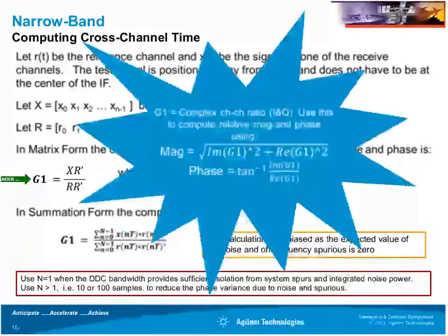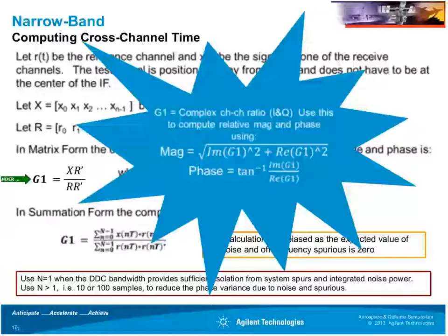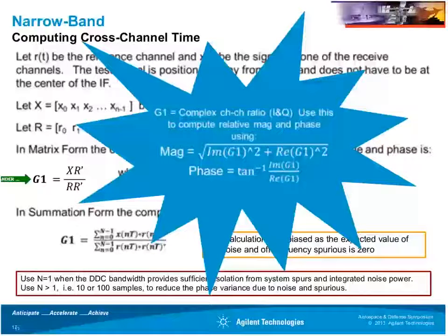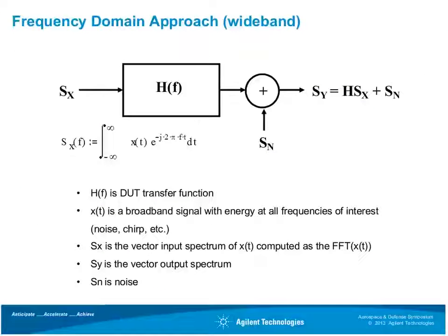Once you have G1, it's a simple matter of math: the magnitude squared from the power, and the arctangent of the imaginary over the real to calculate the phase of the G1 ratio. This is the same technique used to calculate ratios and magnitude-phase measurements in the narrowband scenario with network analyzers. Going forward, new test challenges involving modulated bandwidth signals can be addressed using the frequency domain or wideband approach, which I'll cover in the next couple of slides.